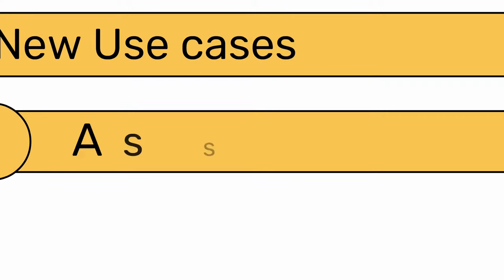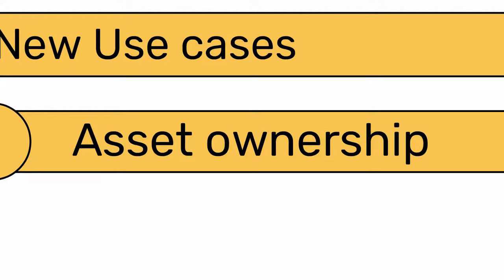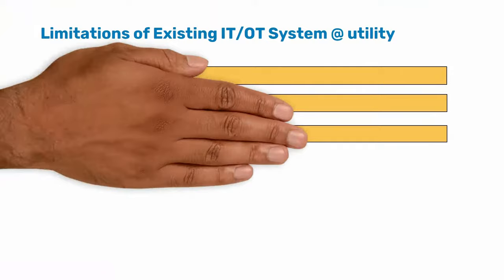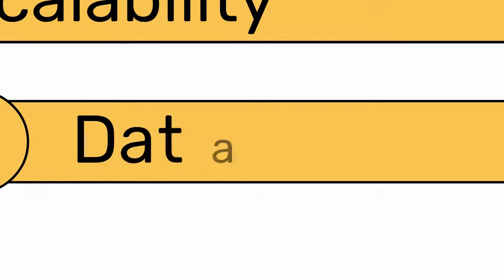DER assets are owned by third parties — prosumers, consumers, or retailers — so utilities cannot directly control these assets similar to other devices which they own and operate. There are also limitations in the scalability of SCADA systems, so it cannot directly fit systems with large connectivity requirements.